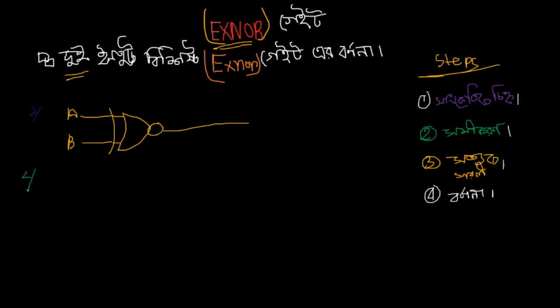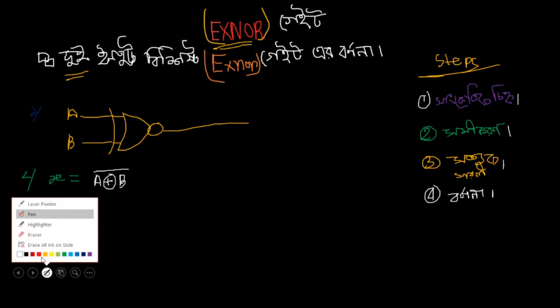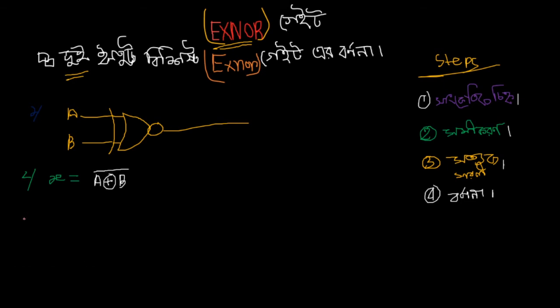So the X-NOR gate symbol shows the gate with its output. The formula is X equals, or the output equals A X-OR B, and then that whole thing is inverted with a NOT.